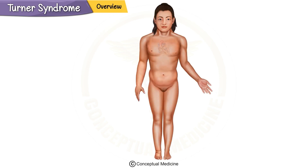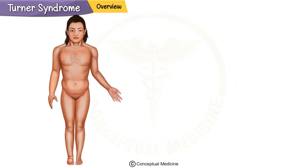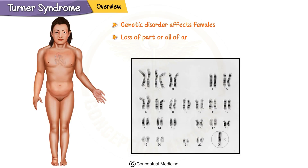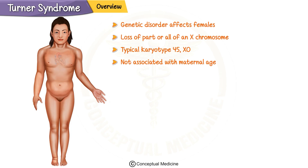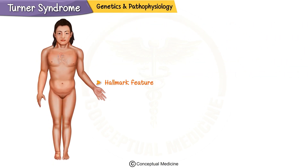Turner syndrome is a genetic disorder that affects females, caused by the loss of part or all of an X chromosome. The typical karyotype is 45,XO, meaning the patient is missing one X chromosome. This condition is not associated with maternal age, unlike some other genetic disorders such as Down syndrome. Turner syndrome is the most common sex chromosome disorder in females.